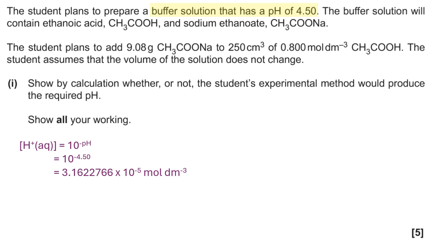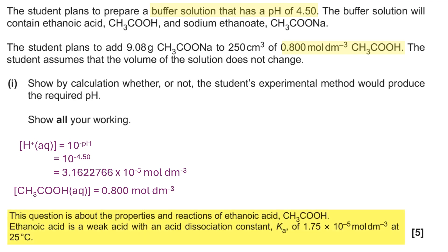The student plans to add 9.08 grams of sodium ethanoate to 250 centimeters cubed of 0.8 molar per decimeter cubed of CH3COOH. I put that concentration down there. Earlier in the question, this is actually part C of a question, and earlier in the question they gave you the information in the yellow box at the bottom, which includes the Ka value of ethanoic acid.